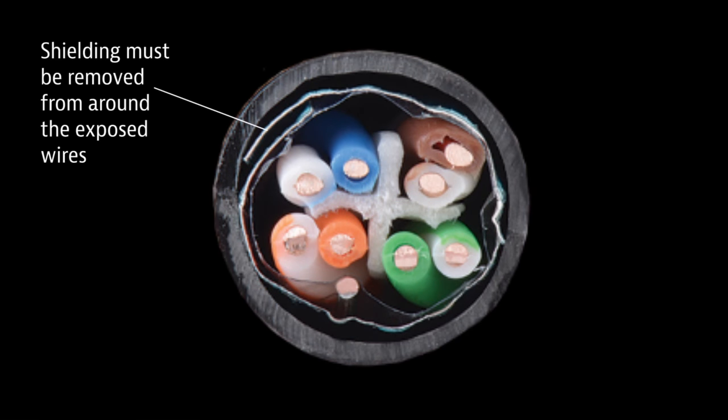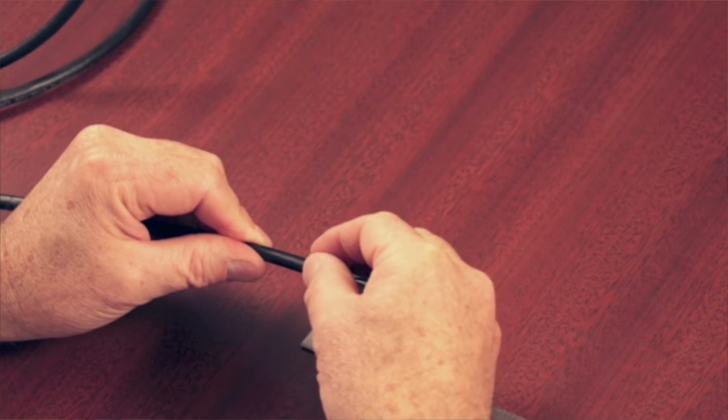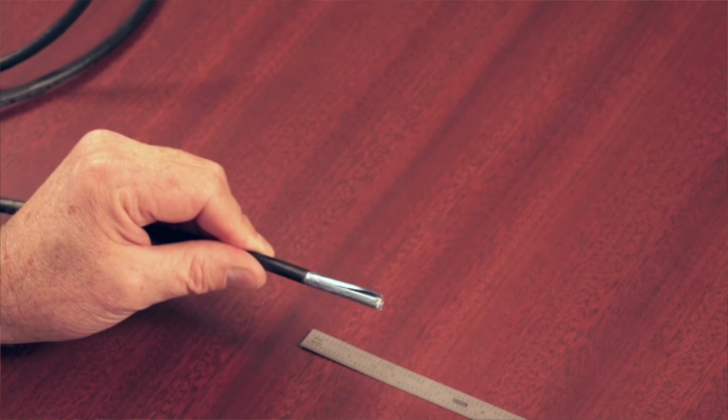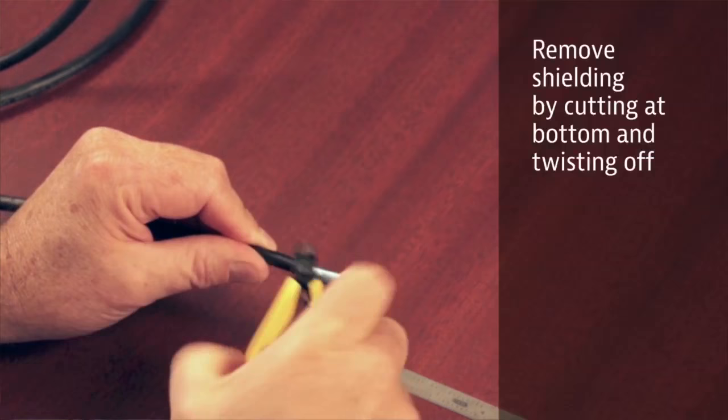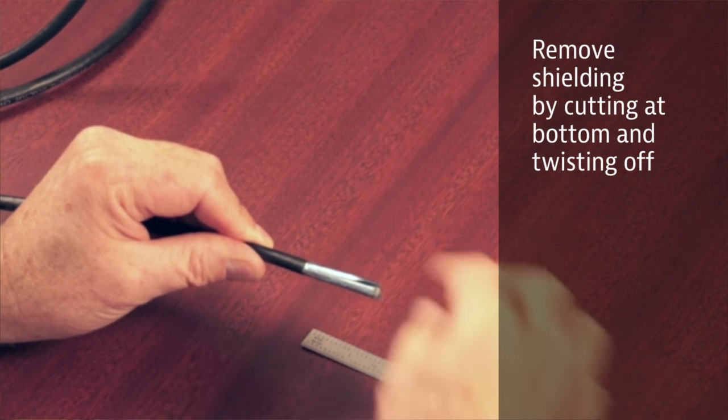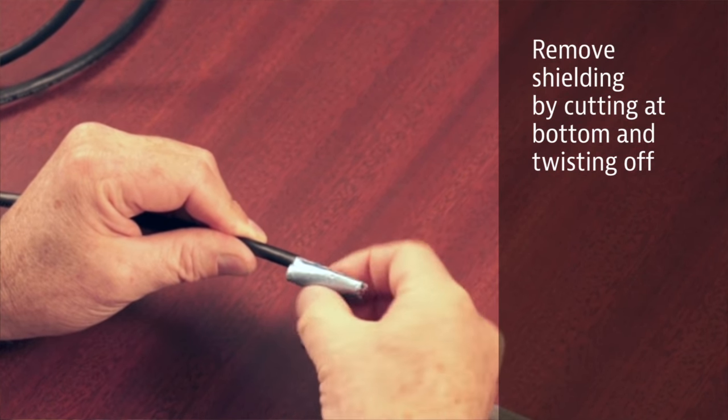Sometimes the shield will come off with your slug, sometimes it won't. If it does not come off, you want to go ahead and peel that shield off. One issue with the shield on these cables is it is very heavy and can slice your fingers. You want to be careful. Score the shield down by the jacket, or take a pair of diagonal cutters and nip the shield. Peel this off and discard the shield.